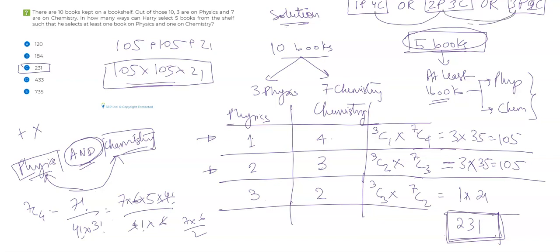So I hope it's now clear when you need to multiply and when you need to add. When both events need to be done together and simultaneously, you put a multiplication sign. When there are two events which cannot happen simultaneously, you need to add them up. This is one way of solving the question. Now, there's another way to solve this question — let me tell you how to do that.